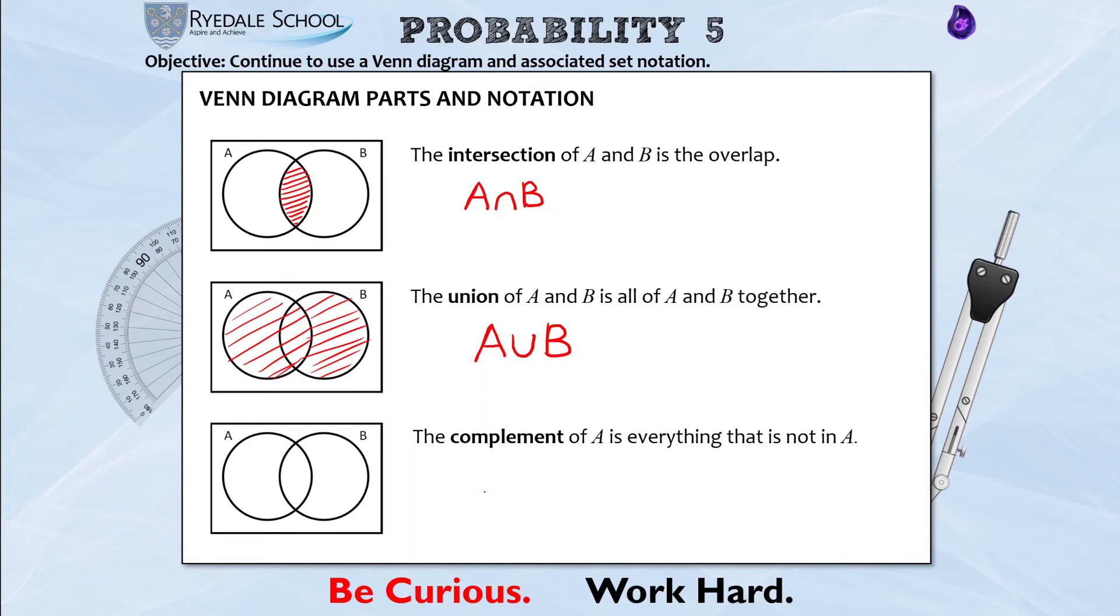So if you see that symbol today, it is the two things put all together. And our final new word for today and our final new bit of notation is the complement of something. And the complement of a letter is everything that is not in the letter. So for example, if this circle represents A, the complement of A, and again I would color this in on your sheet, is everything that is not in A. How do I write that? Well I write that as an A with a dash at the side, it's a little bit like an inverted comma. So that is everything that is not in A.